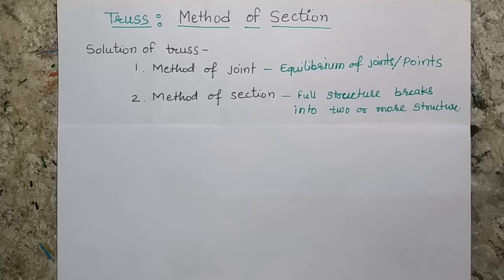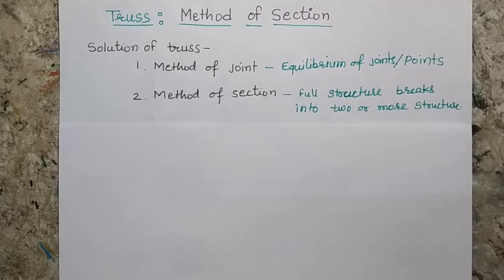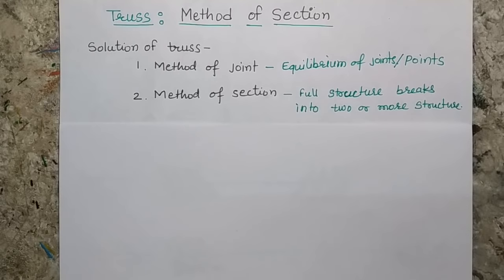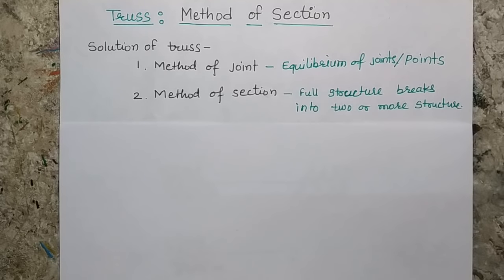In the truss problem, our main objective is to identify the nature of the forces in the truss members as well as the magnitude of forces in the truss members. There are two methods to solve the problem of a truss: one is the method of joint and the other is the method of section.